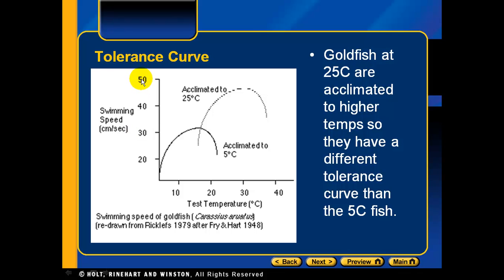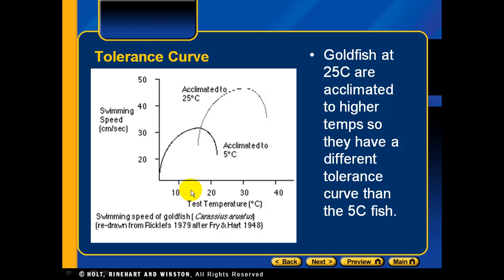Here's an example of a tolerance curve for goldfish at 25 degrees Celsius. They're acclimated to higher temperatures and have a higher swimming speed at higher temperatures, giving them a different tolerance curve than fish acclimated to five degrees. The five-degree fish have their peak speed of about 32 centimeters per second at around 15 degrees Celsius.